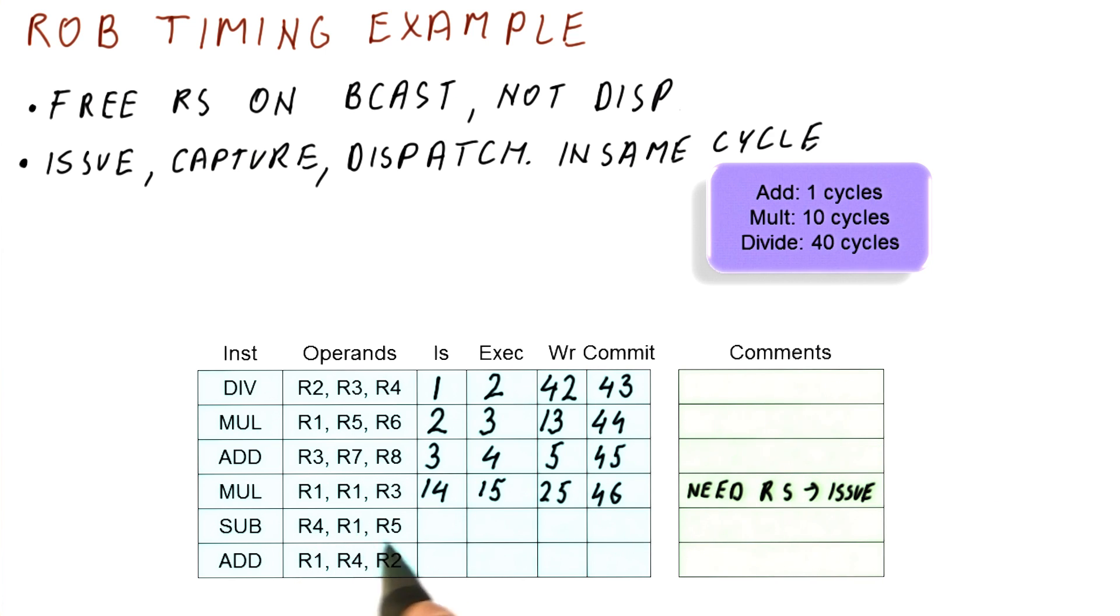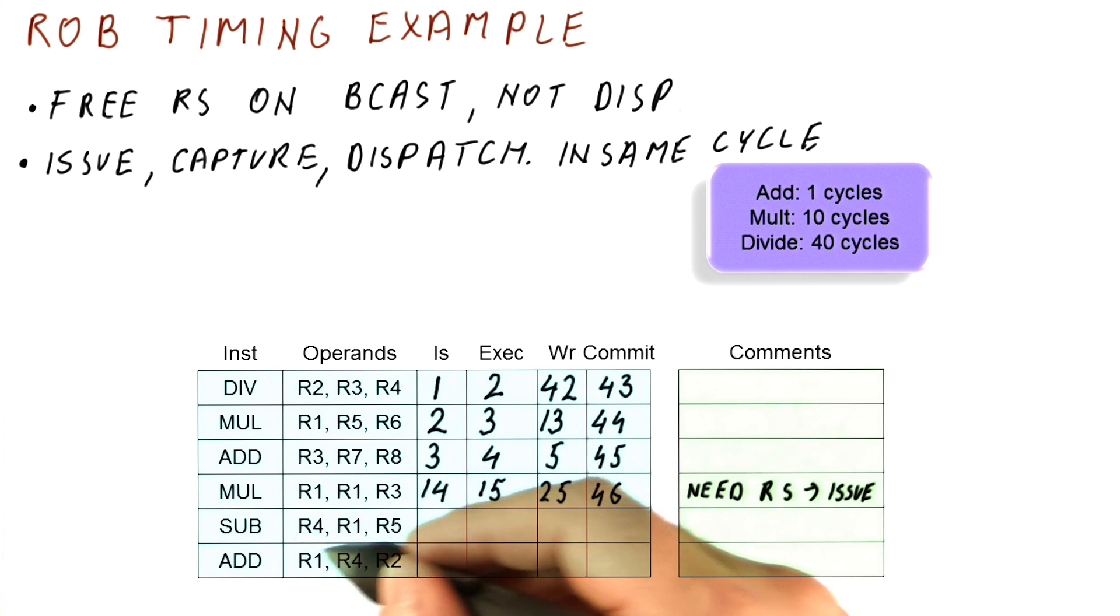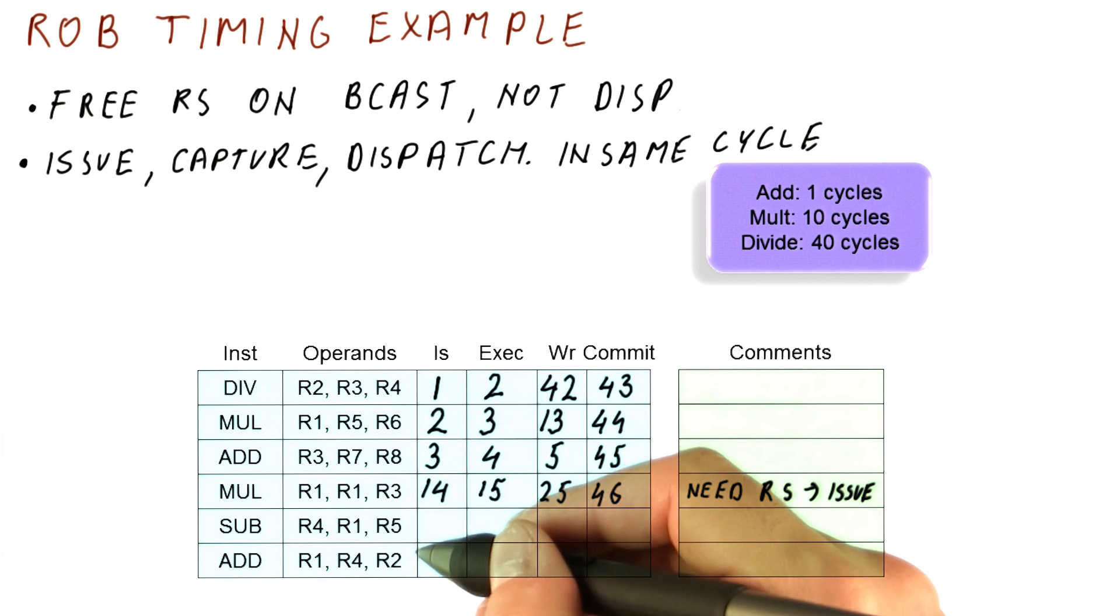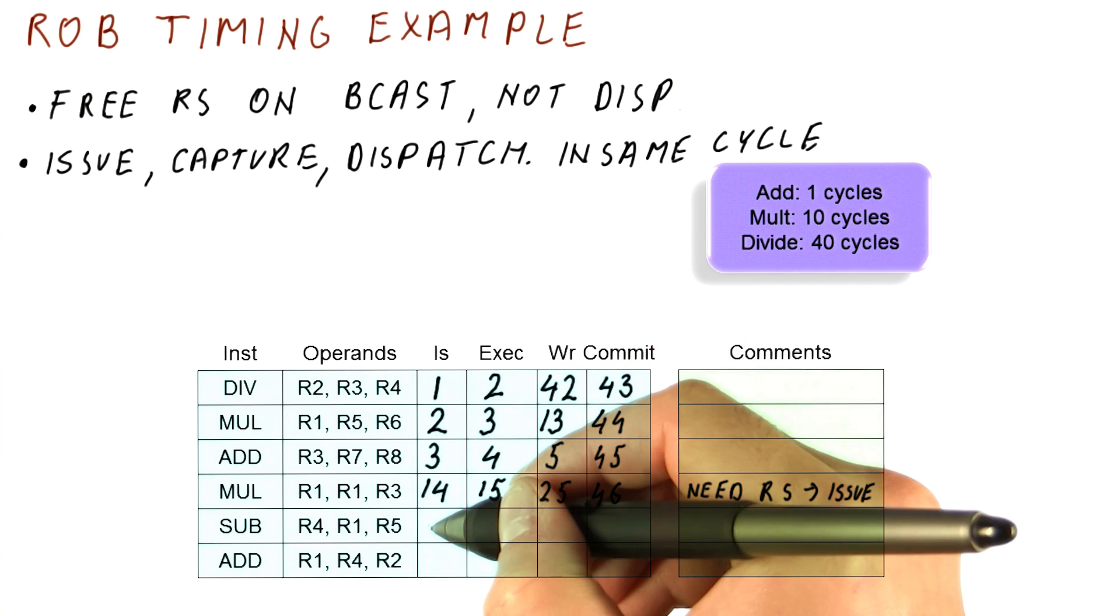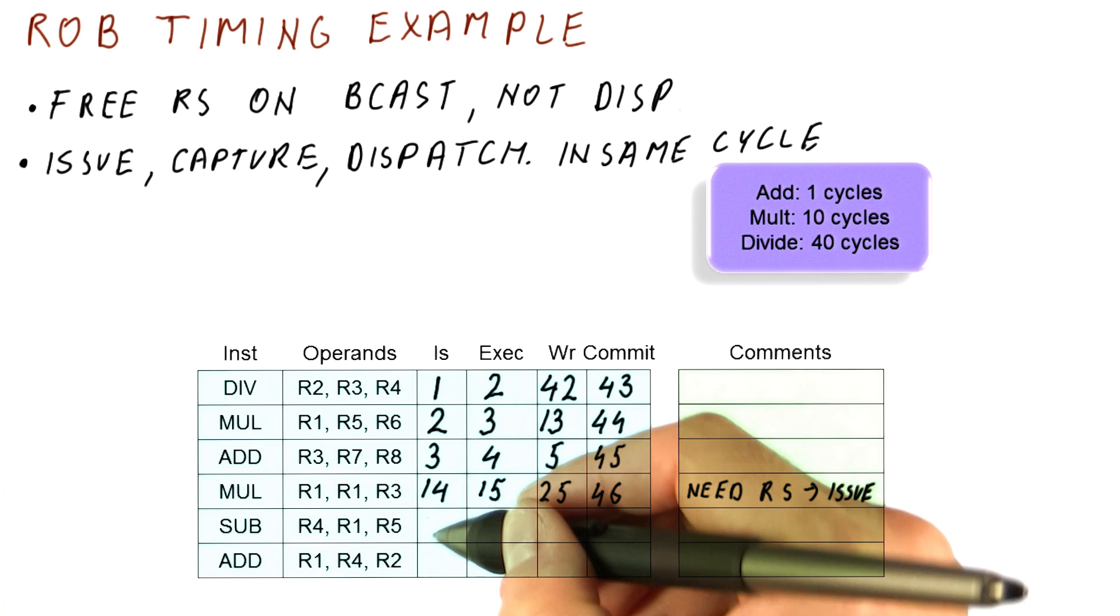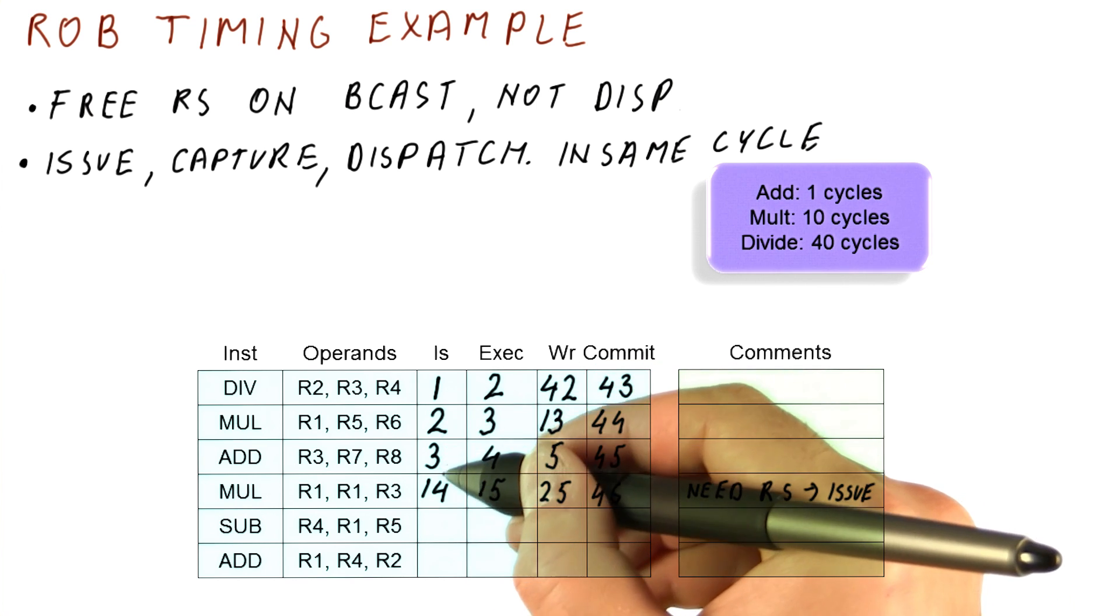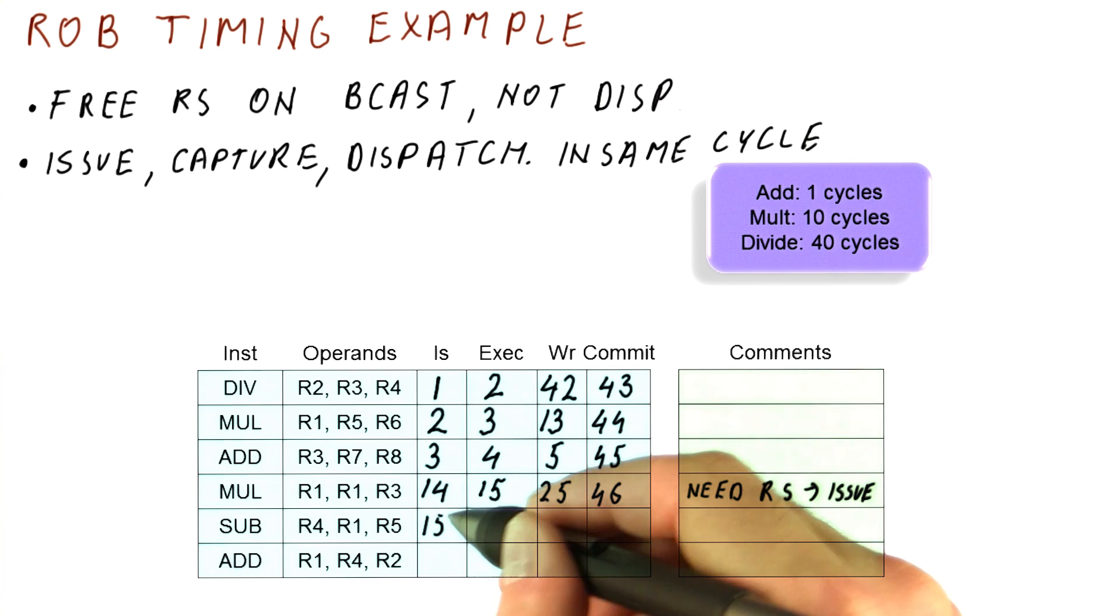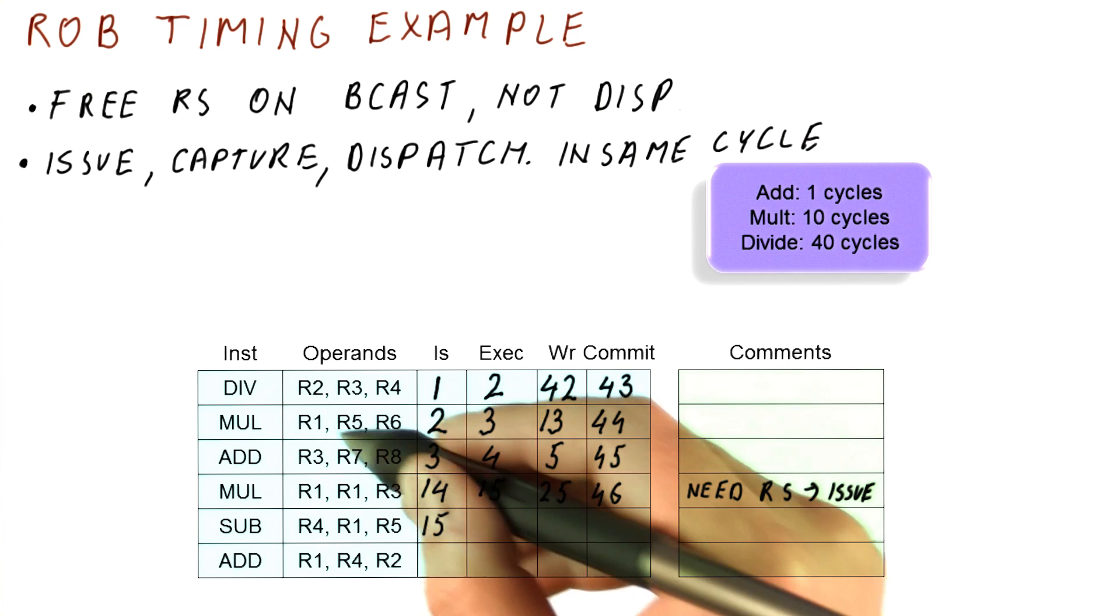Now let's look at the subtract instruction. It is going to try to issue in cycle 15. We have to issue in order. So although we could have issued this instruction in cycle four, as far as dependencies are concerned. Because we could have issued this instruction in cycle three, four, five, if everything was okay. And there was a free reservation station at the time here. But remember, we have to issue instructions in order. Because of that, this will issue in cycle 15. And we will now grab another reservation station in the add subtract unit.